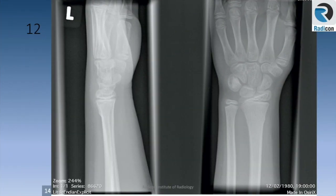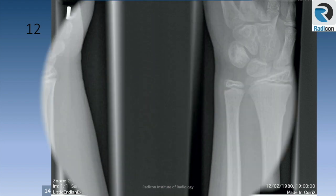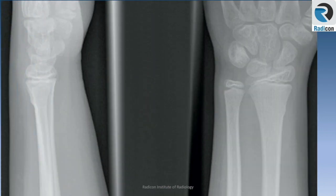Case 12 is a wrist film in a child. There is an easy finding: buckle fracture of the distal radius. Please remember, do not ever call a buckle fracture in adults and a mature skeleton. You will be penalized for that in the exam.